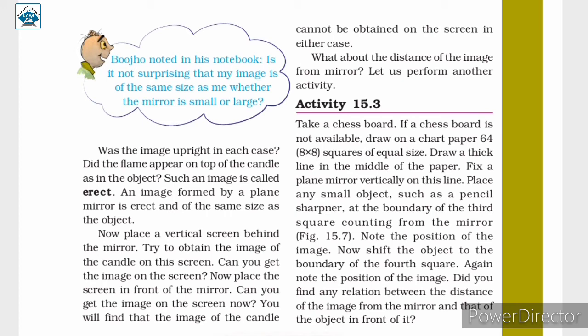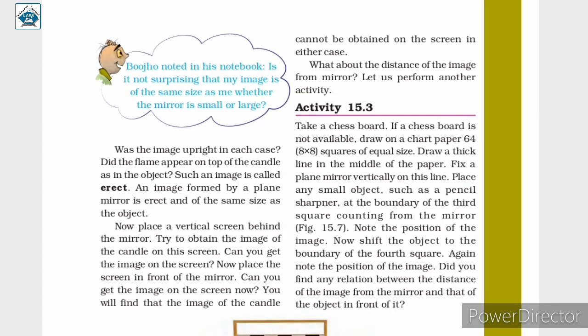Next, take a vertical screen and place it both behind and in front of the mirror. You can observe that the image of the candle cannot be obtained on the screen. Since we are asked about the distance of the image from the mirror, let us now understand activity 15.3.